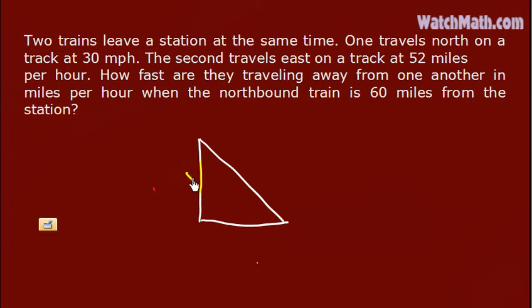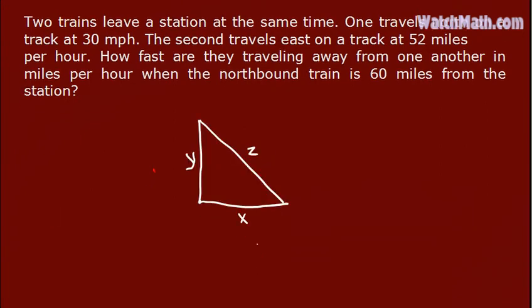Let's put this as Y and this is X. Let Y denote the distance of the first train from the station after three hours, and similarly X is the distance of the second train from the station after three hours. This is Z, and the relationship between X, Y, and Z is given by the Pythagorean theorem.